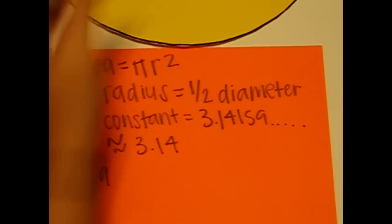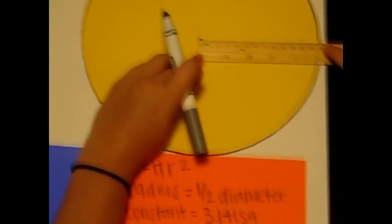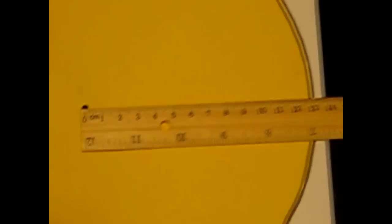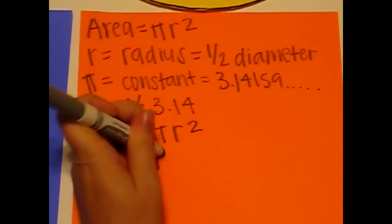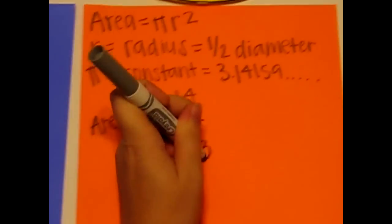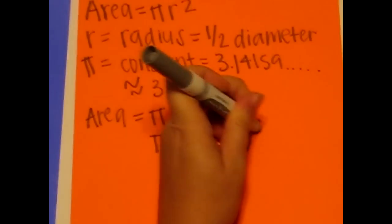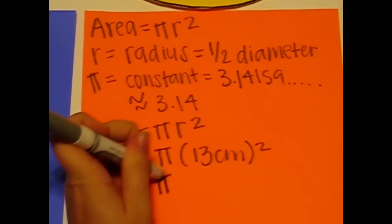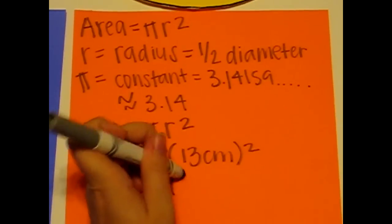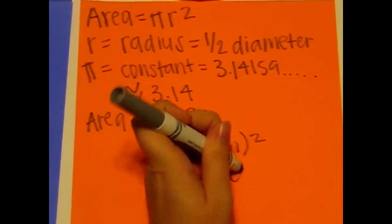Now we're going to find the area of the circle we have here. So the radius is 13, so we're going to plug it back into our formula. Now pi times 13 squared is 169 centimeters.